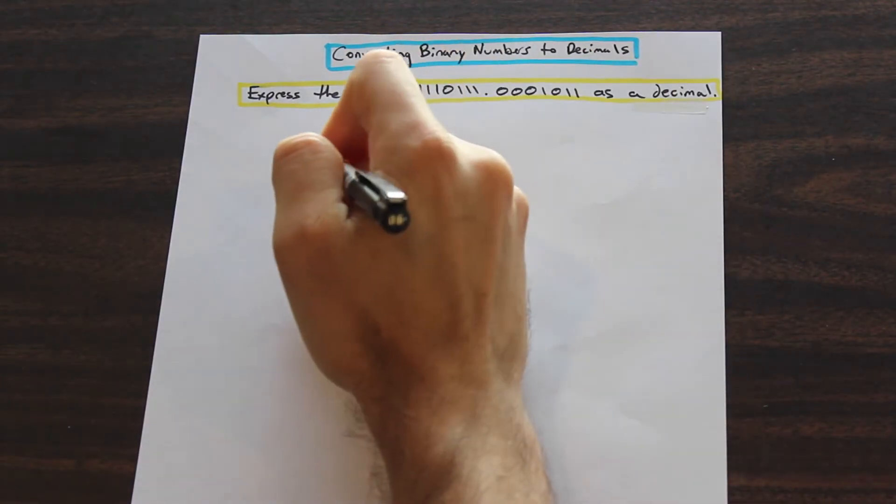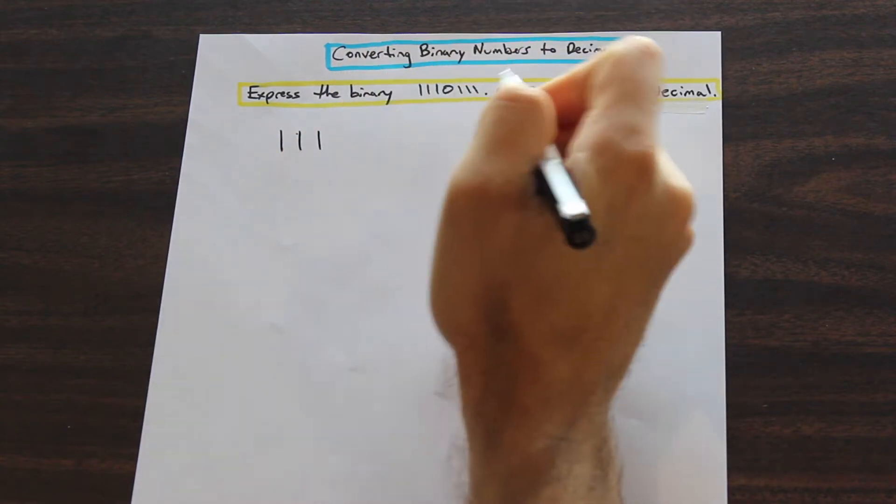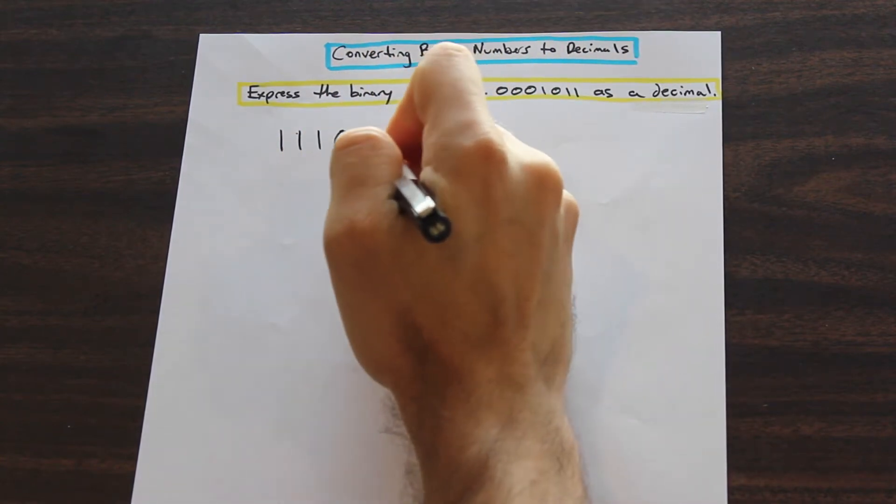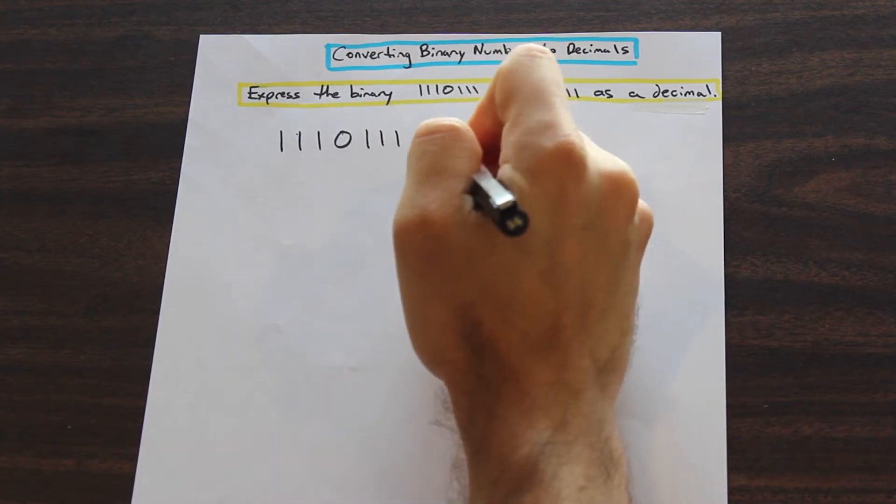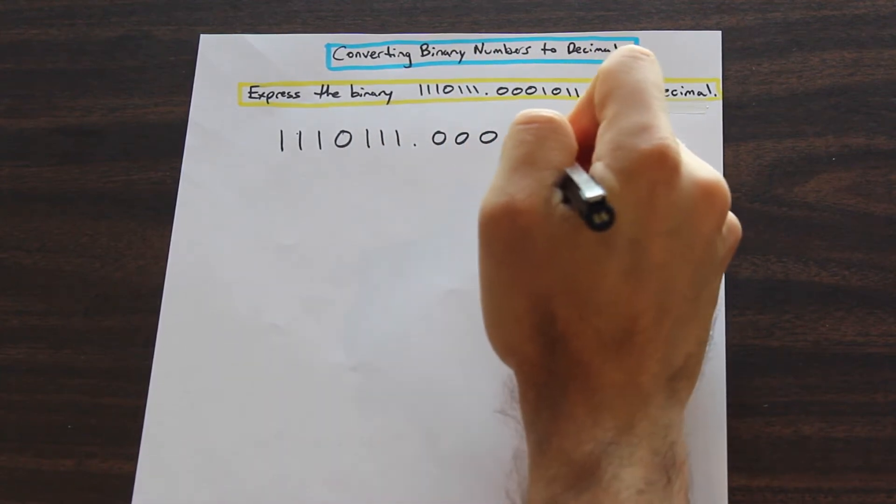So the first step, let's go ahead and we'll take this number, we're going to write it out a little bit bigger than it's currently written. 1110111.00001011. You can leave a little bit of space in between them because we're going to write some numbers on top of this number.